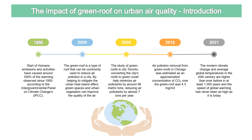With green roofs, we can help to mitigate the urban heat island effect, and green spaces and urban vegetation can improve air quality. In 2005, there was a major case study in the city of Toronto where the entire urban area was covered with green roofs. This gave us information showing it minimizes air pollutants by around 58 metric tons and reduces air pollutants by almost 7 tons per year.